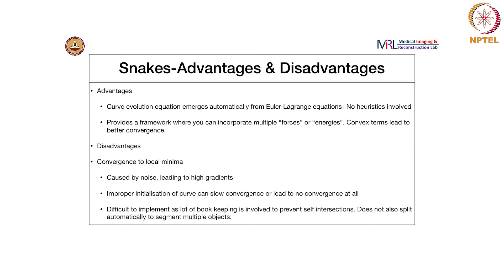This framework allows you to incorporate multiple forces or other energies, using convex terms that have only a global minimum, terms that are easy to differentiate and do not have too many local minima. You can add more forces to make the curve move faster. Two extensions are called balloon forces and gradient vector field. The disadvantage is that the method converges to local minima — images have noise with high gradients, and a curve can latch onto noisy pixels not corresponding to the object of interest.